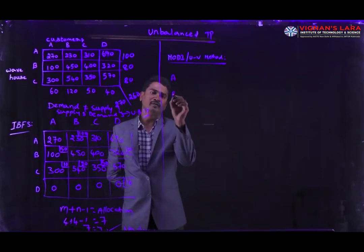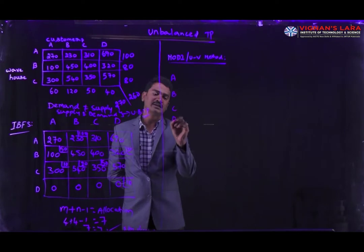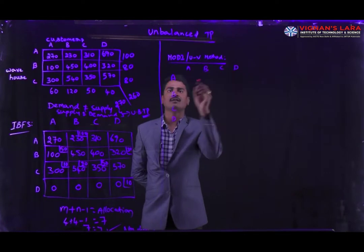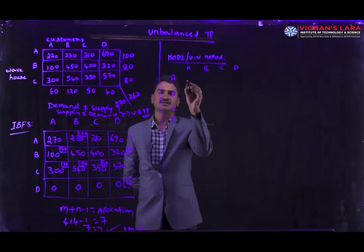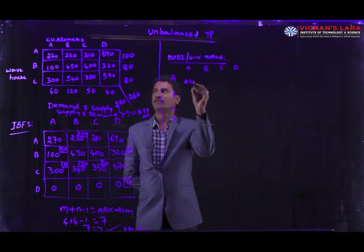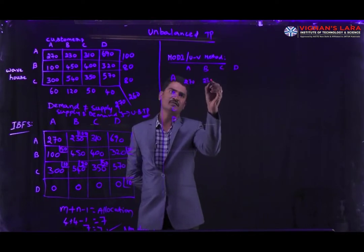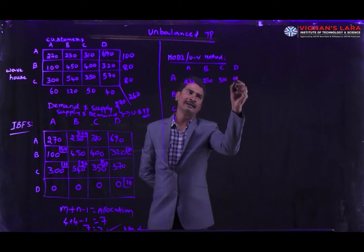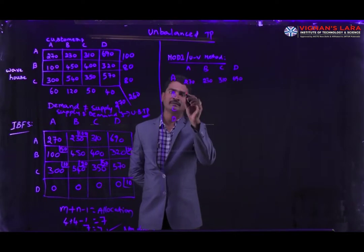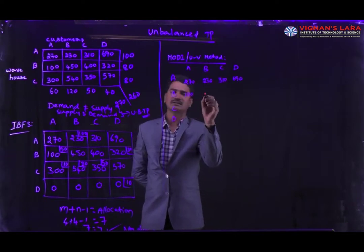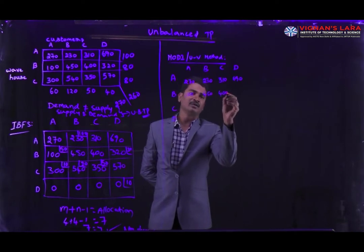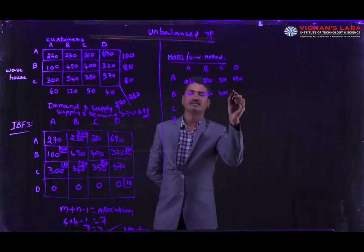In the UV method, the first step is to calculate the shadow prices for each cost value or for each commodity. We have 4 supply stations and 4 demand centers. We are going to calculate the shadow prices for those stations. After calculating the shadow prices, we check whether the problem is at optimality or not.